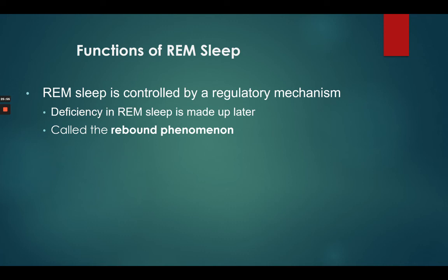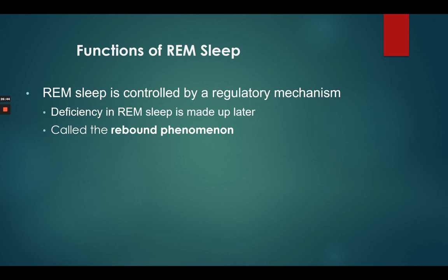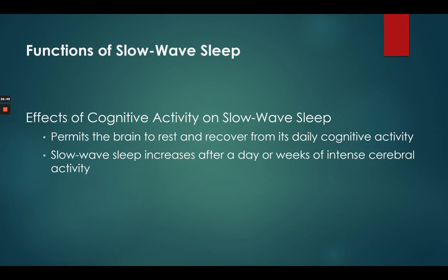REM sleep, for whatever reason, you can make up. If you don't have many dreams one night, you might have a ton the next night. Or if REM sleep is disrupted in the first part of the night, you may get bombarded with dreams later — many dreams, fast and intense. This is called the rebound phenomenon. Our body seems to desperately want to make up REM sleep, recovering whatever was lost either later that night or the following night.